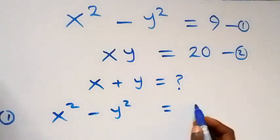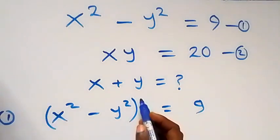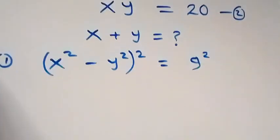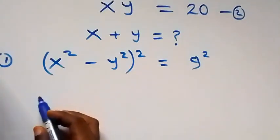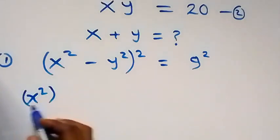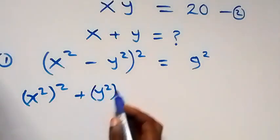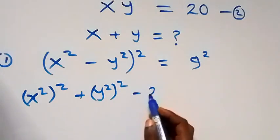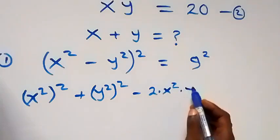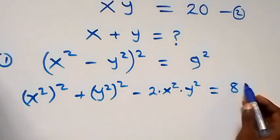From equation one, x squared minus y squared equals 9. Let's square both sides. Expanding, we have x squared squared plus y squared squared minus 2 times x squared times y squared, which equals 9 squared, giving us 81.